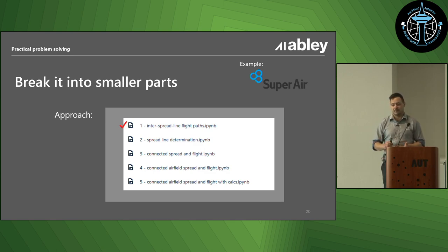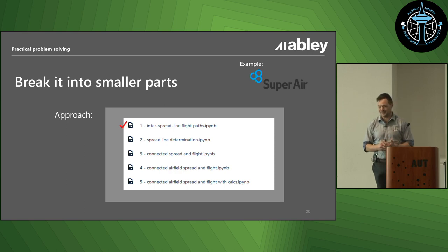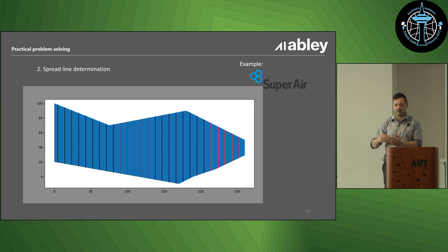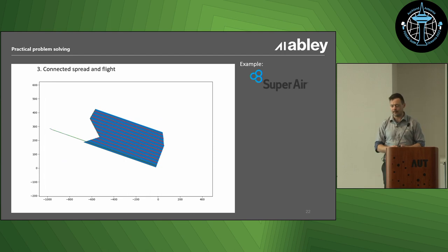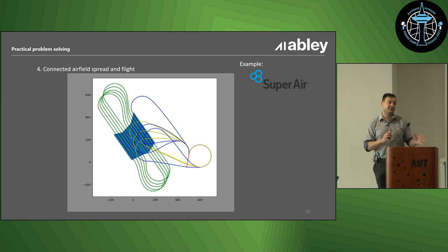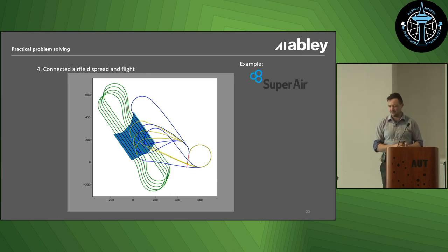I did this work a few years ago and made this presentation this year, and when I went back and looked at my notebooks, I had literally done what I'm telling you to do - breaking it down into smaller parts. These are the names of my notebooks. I've already shown you the inter-spread lines between the flight paths. The next thing is working out, for a given paddock, where you're going to split it up and spread, and what order you're going to fly those in - simple rules, but that was another notebook, adding in that layer of complexity. The next thing is actually connecting those two things up - I've animated that into a GIF, quite hypnotic to watch. And then the plane obviously has to go back to the airfield to refuel and get more fertilizer, so integrating that in. Those flight lines in between are a little bit more complicated, but having taken it a step at a time, it wasn't too bad.